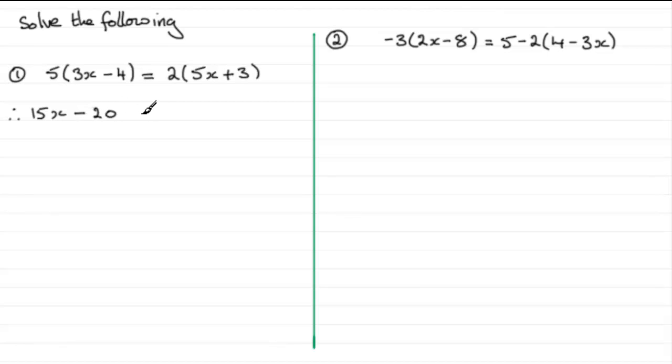This is going to equal and now we just do 2 times 5x and 2 times the plus 3. So 2 times 5x is 10x and then 2 times plus 3 is going to be plus 6.